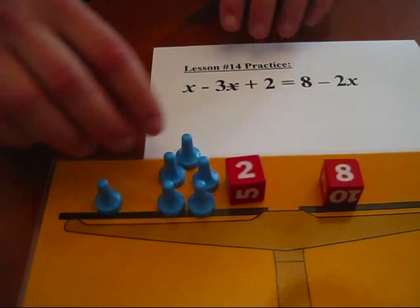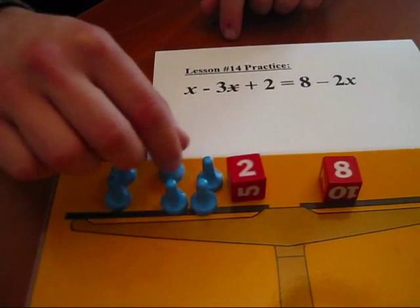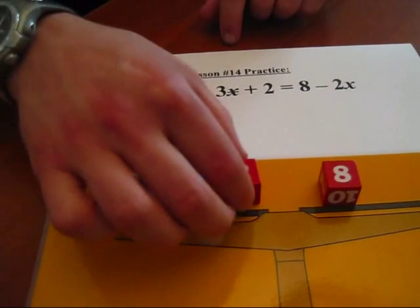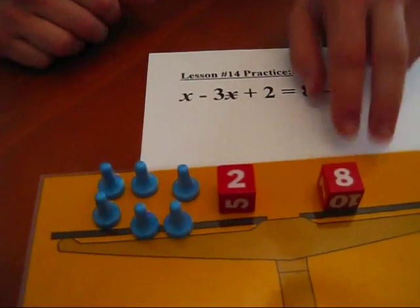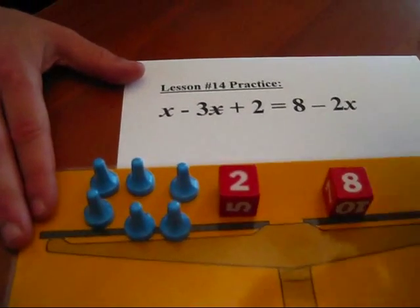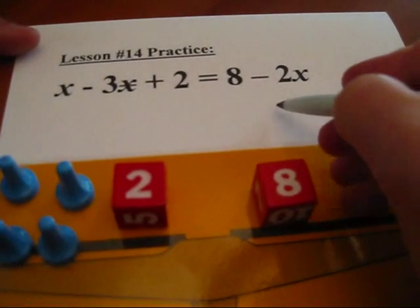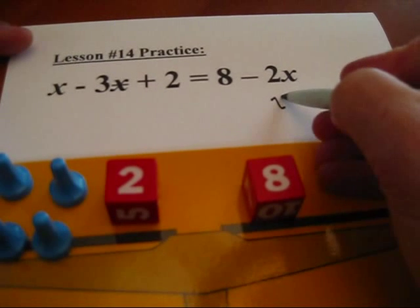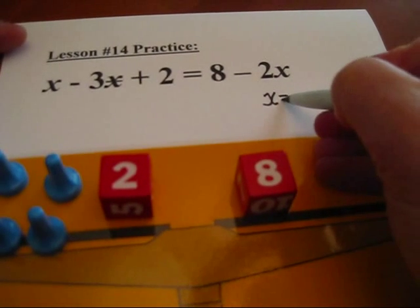It goes 1, 2, 3, 4, 5, 6, 7, 8. And on the other side, we have 8 again. Okay, so each x is equal to 1. Okay, let me write down the answer. x is equal to 1.